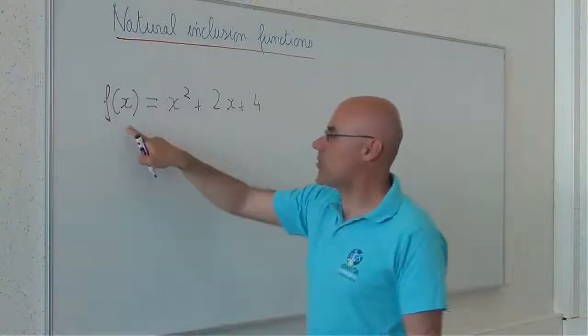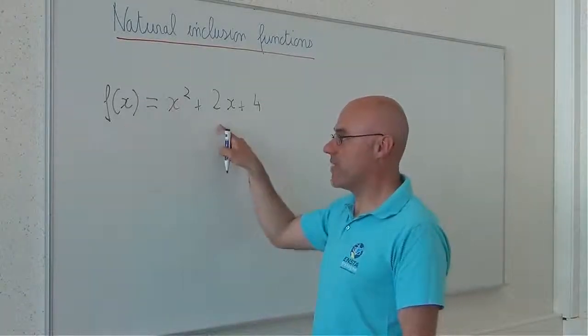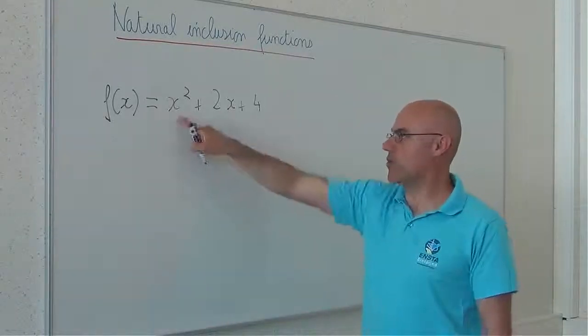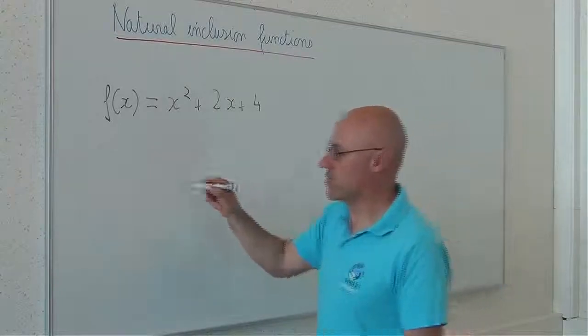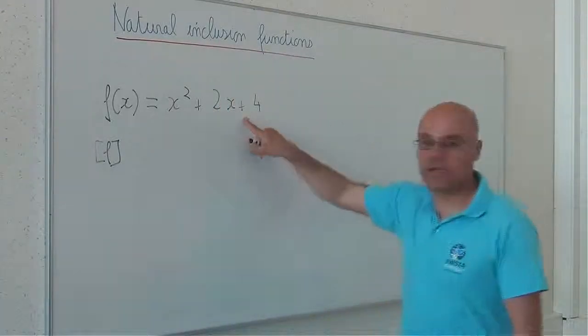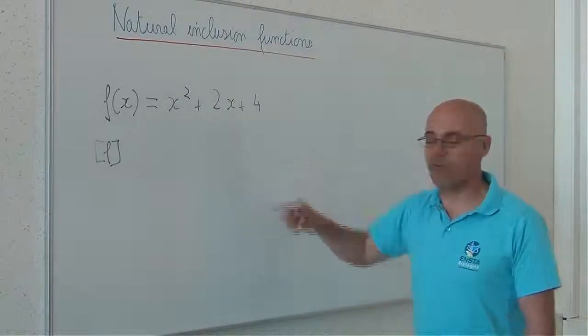How can I compute an inclusion function for this one? I just replace all occurrence of the variable x by the corresponding interval and the operator by the interval counterpart.